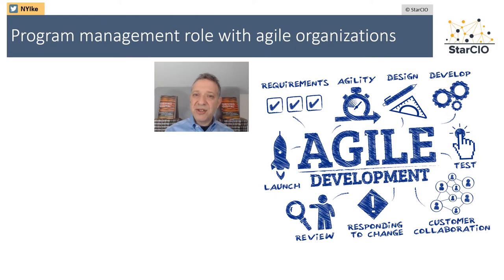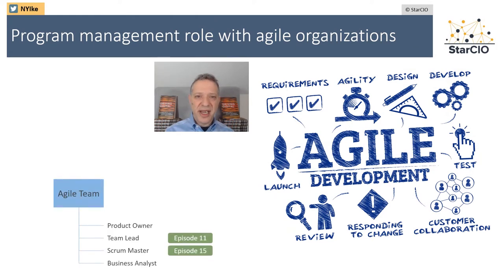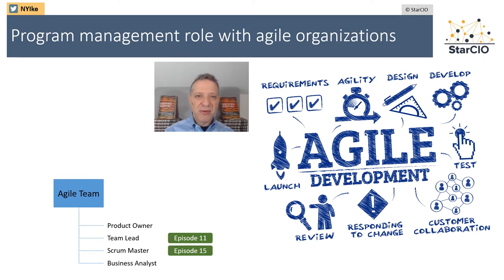So first, let's talk about a single Agile team. Most people practicing Scrum know who a product owner, or a team or tech lead are. There are also roles of the Scrum Master in some groups, and they also assign a business analyst. You can see I've covered some of these roles in previous episodes of 5 Minutes with NY Ike.